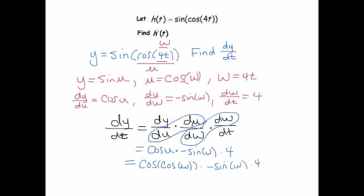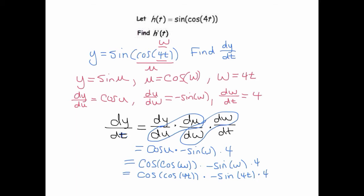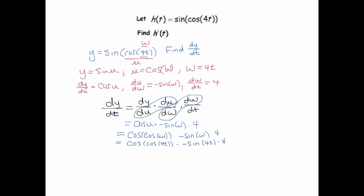So now it's all in terms of w, but w is equal to 4t, so it's the cosine of the cosine of 4t times negative sine of 4t times 4.